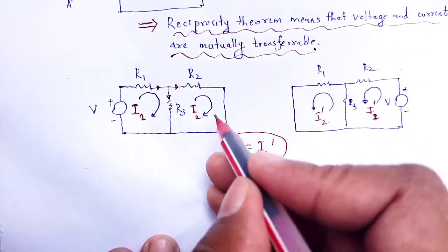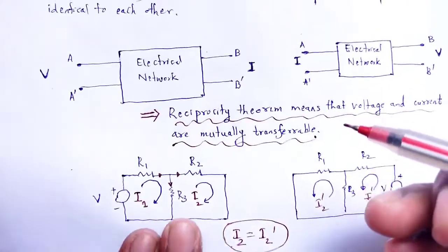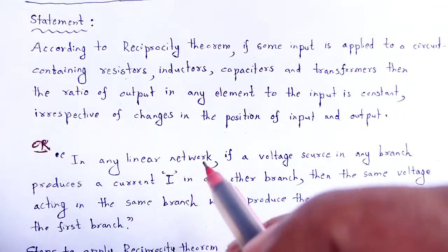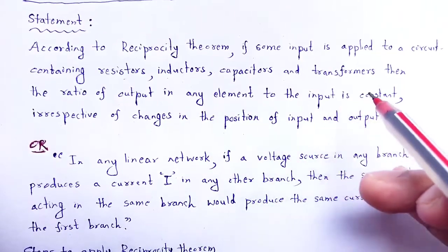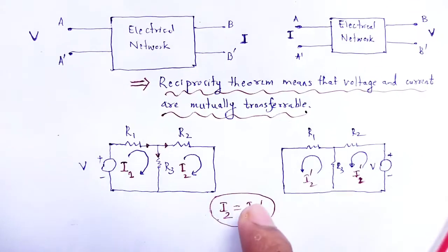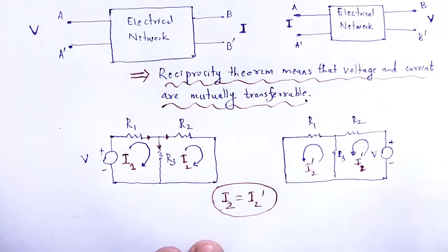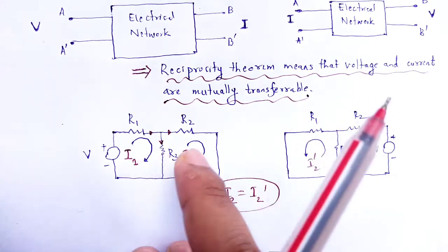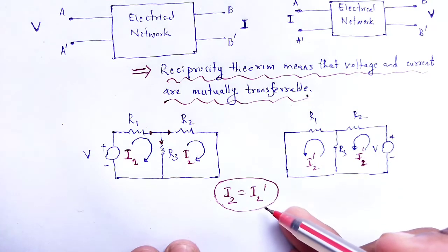By using the statement of reciprocity theorem, as the ratio of output in any element to the input is constant, here I2, here I1 dash equal by using reciprocity theorem, that can be proved by using KVL, Kirchoff's voltage law, applied to that corresponding networks, and finally we observe I2 is equal to I1 dash.